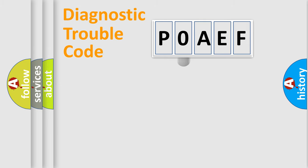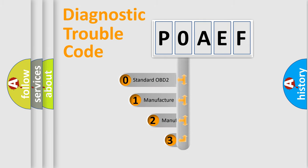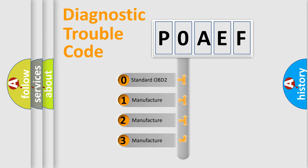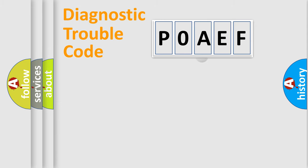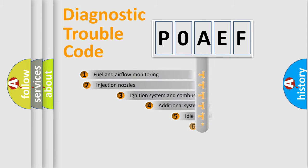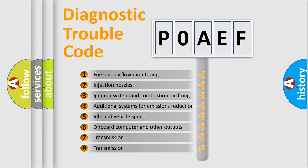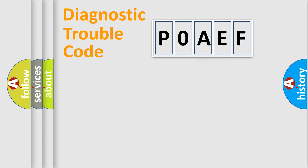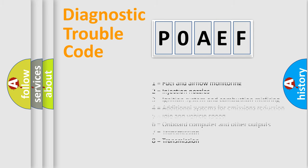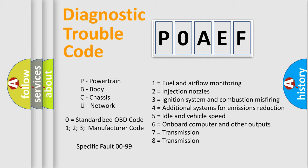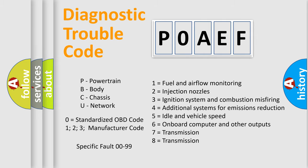This distribution is defined in the first character of the code. If the second character is expressed as zero, it is a standardized error. In the case of numbers 1, 2, or 3, it is a more manufacturer-specific expression of the car error. The third character specifies a subset of errors. This distribution is valid only for the standardized DTC code, and only the last two characters define the specific fault of the group.